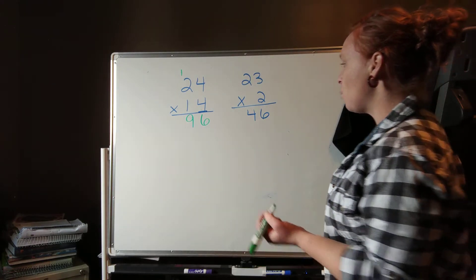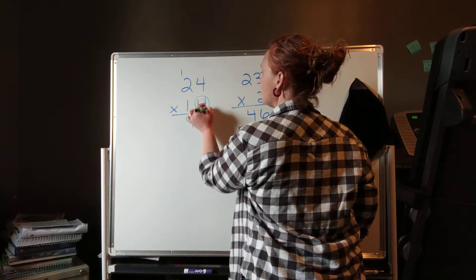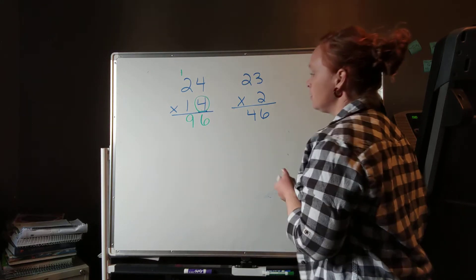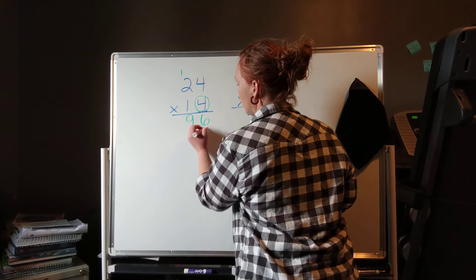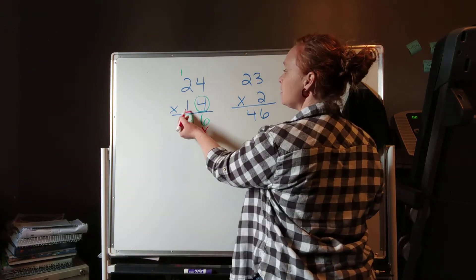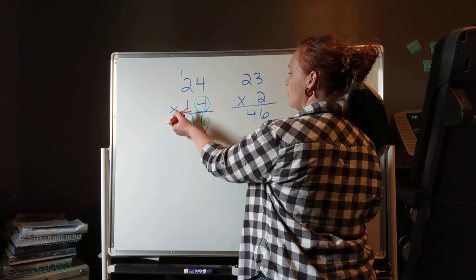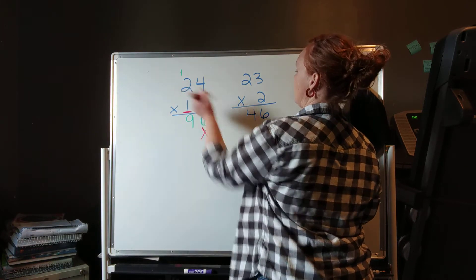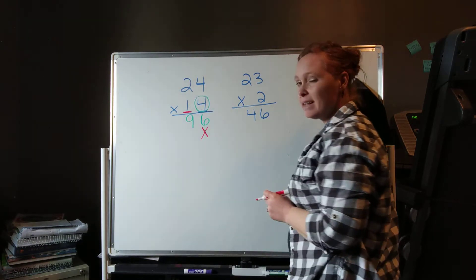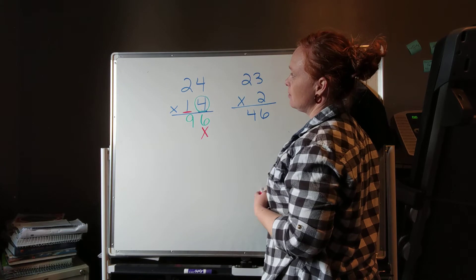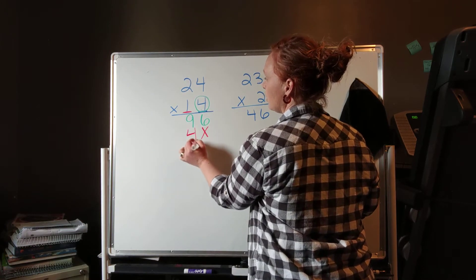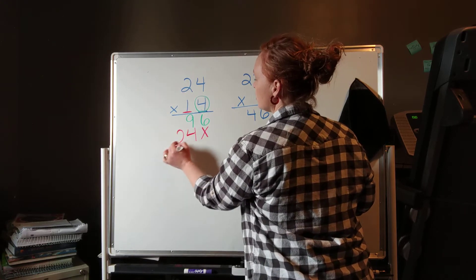Okay, now the next thing, now that we've done the ones place, now we want to mark out the ones place, and now we want to multiply by the tens place. We need to do the tens place times the ones place, and the tens place times the tens place. Now I'm going to go up here and erase that one that I carried so I don't accidentally make a mistake and add that. 1 times 4 is 4, 1 times 2 is 2.